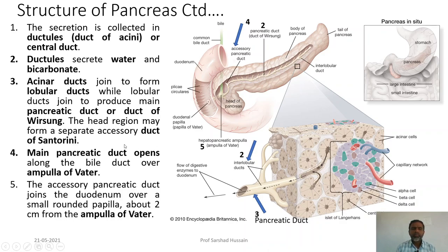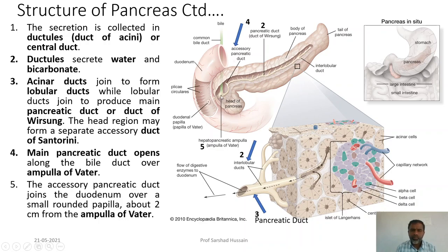The head region may form a separate accessory duct called the duct of Santorini. The main pancreatic duct, along with the bile duct, opens at the ampulla of Vater. Inside the duodenum, this corresponds to the papilla of Vater, behind which the ampulla of Vater is present. The accessory pancreatic duct joins the duodenum over a small rounded papilla about two centimeters from the ampulla of Vater.